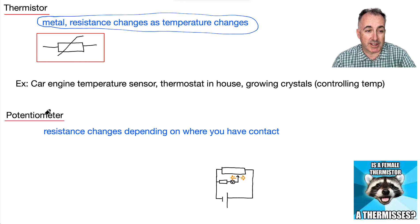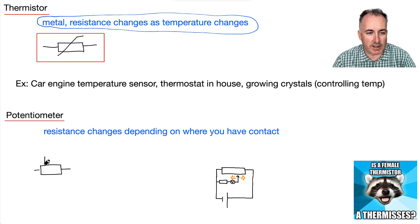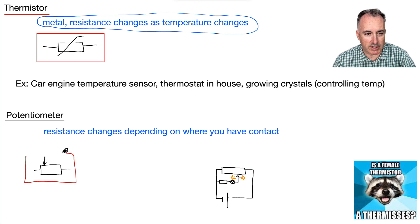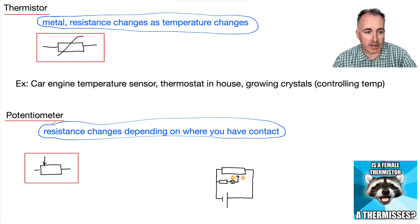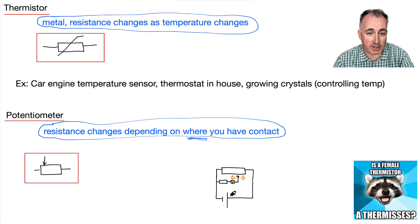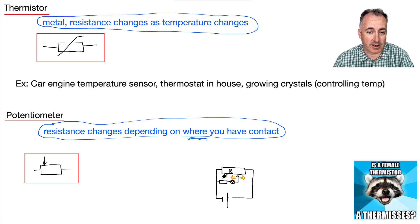We also have something called a potentiometer. The symbol looks like a resistor with a little arrow going down onto it. Its resistance changes depending on where you have contact. For example, in a circuit with a battery and a resistor R, depending on where you place the contact point, there's going to be a different resistance overall. That's what a potentiometer is.